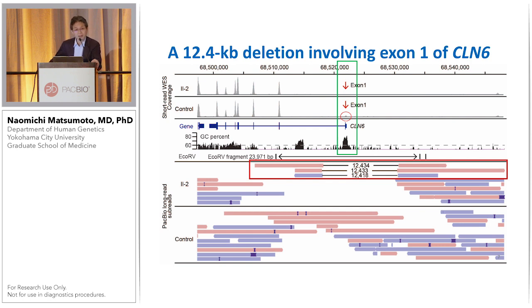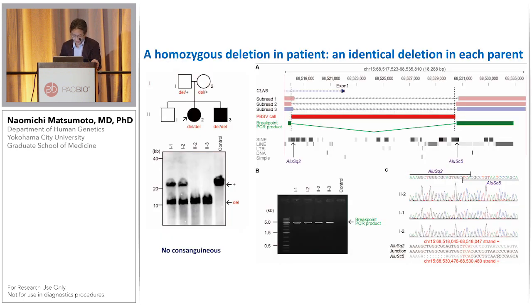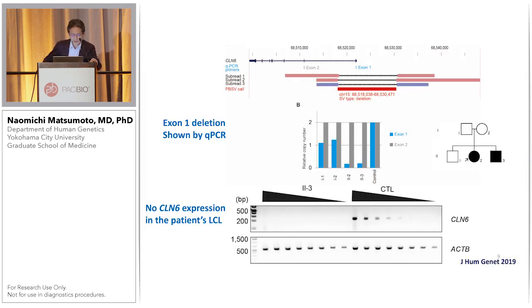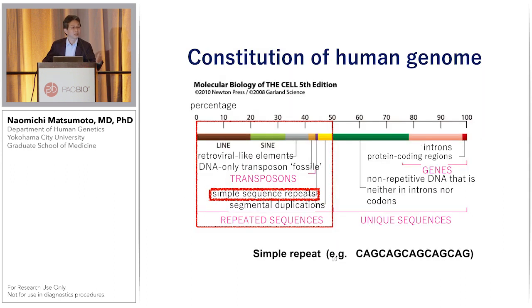We realize this region is high-GC, making it truly a disease gene involvement. Surprisingly, the parents had a heterozygous deletion, and the patient siblings had a homozygous deletion. This is an unrelated family — heterozygous deletion carriers married and caused homozygous deletion in the patients. We checked CLN6 expression in patient lymphoblastoid cells, and nothing could be seen. This confirmed these patients truly lost CLN6 expression, which caused this disease in these families.